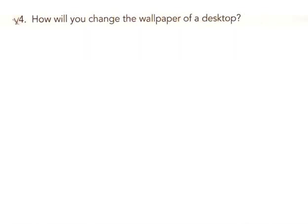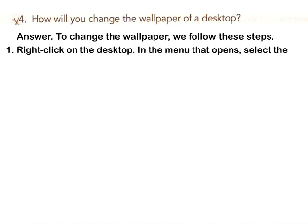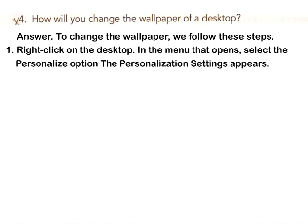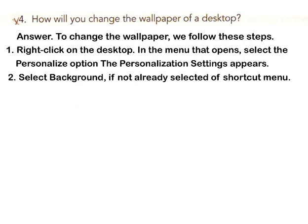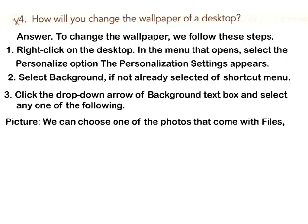Question 4: How will you change the wallpaper of a desktop? Answer: To change the wallpaper, follow these steps. Step 1: Right-click on the desktop; in the menu that opens, select the Personalize option. The Personalization settings window appears. Step 2: Select Background if not already selected from the shortcut menu. Step 3: Click the drop-down arrow of the Background text box and select any one of the following options.